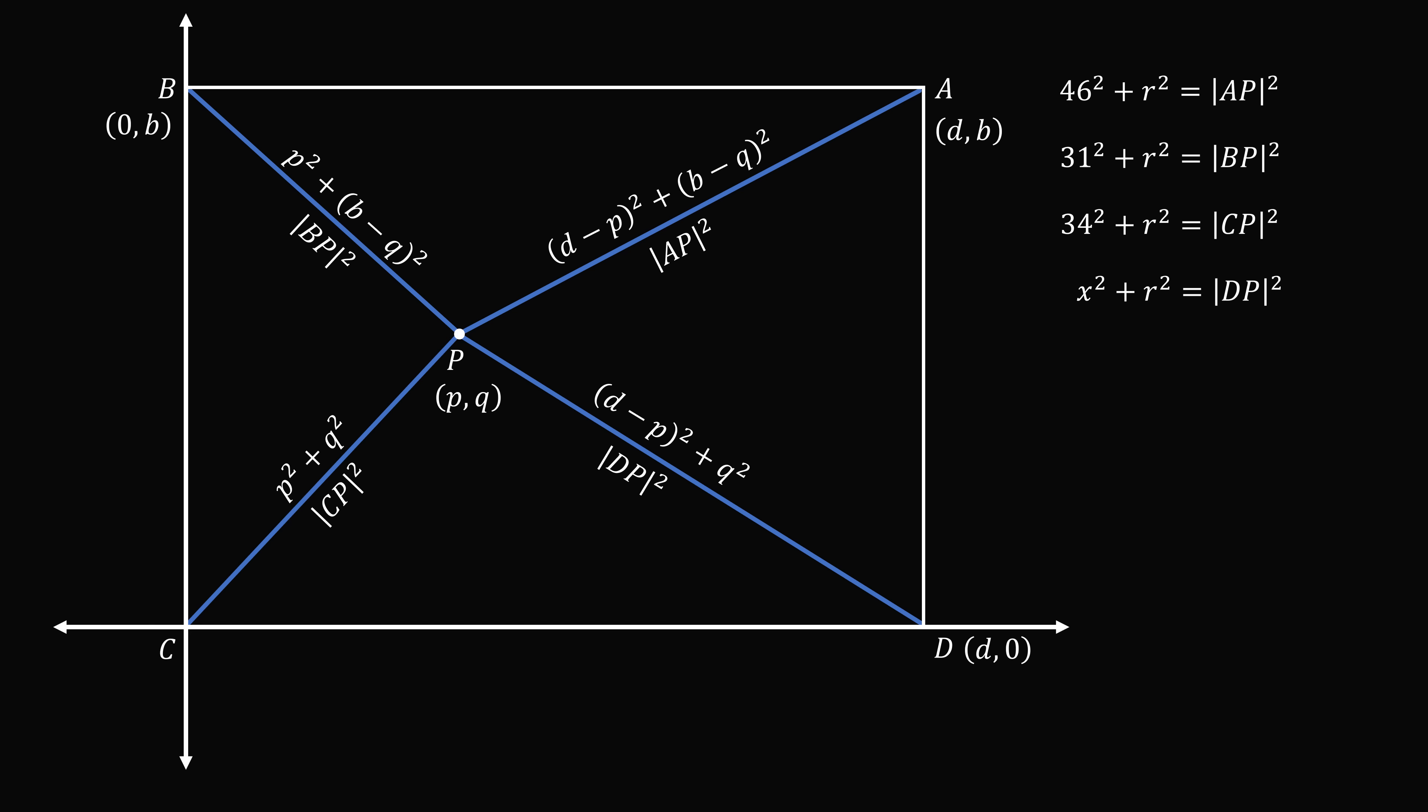By simple inspection, we can see that the square of AP plus the square of CP is equal to the square of BP plus the square of DP. And both of these are equal to p squared plus q squared plus (d minus p) squared plus (b minus q) squared.